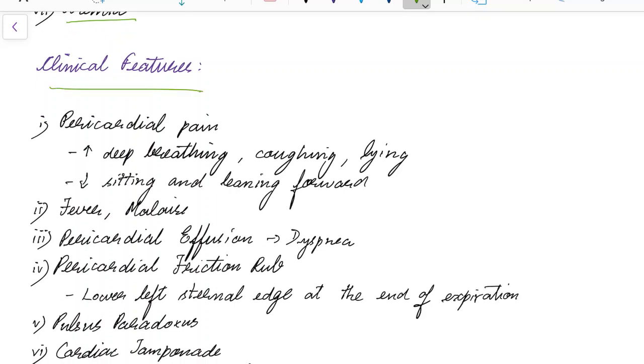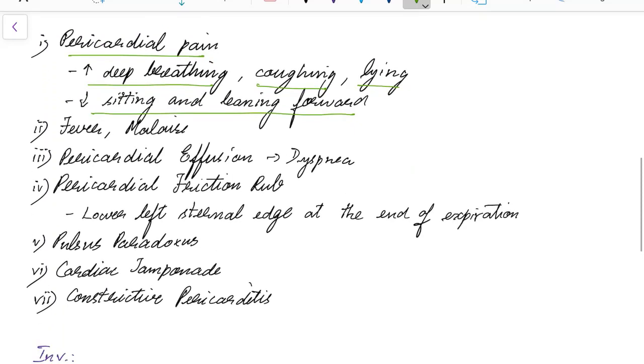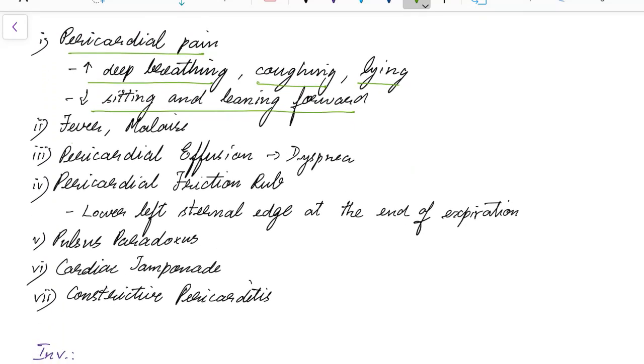Now let us see about the clinical features of acute pericarditis. There will be pericardial pain. This pain will be aggravated on deep breathing, coughing, and lying. It will be relieved while sitting and leaning forward. There will be fever and malaise in acute pericarditis.